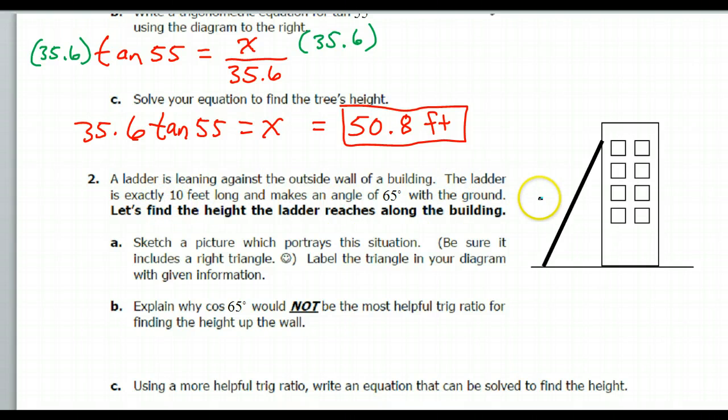The ladder is 10 feet long, so there's my 10 feet. It makes a 65 degree angle with the ground, so this would be 65 degrees right here. A right triangle, so there's my right angle right there. So there's my sketch.